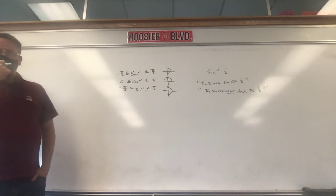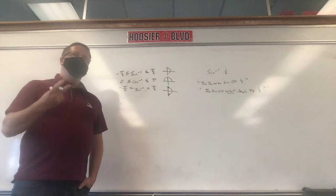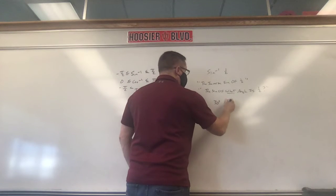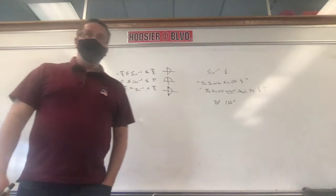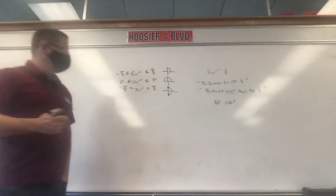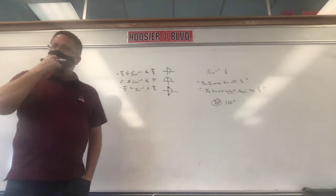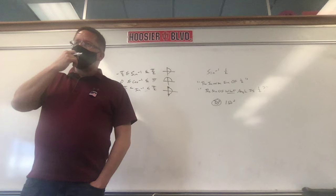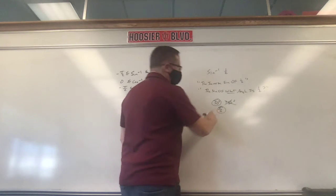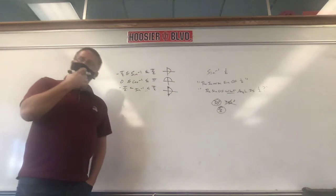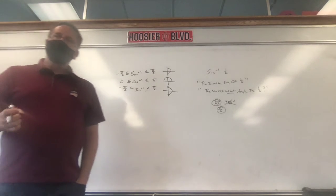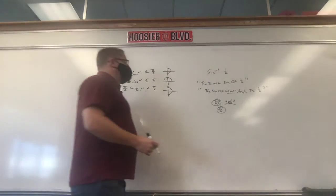We did a couple of these yesterday. You look at your unit circle — there are two spots where sine is one-half: 30 degrees and 150 degrees. Do you need both? No. If you put both, they're wrong. Only one is acceptable. Which one do we keep — 30 or 150? We keep 30. What's wrong with 150? It's on the left-hand side. For inverse sine, you're only allowed to look at the right-hand side. And I want it in radians: pi over 6.